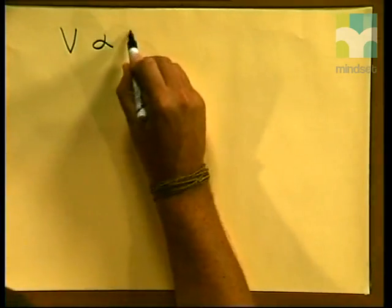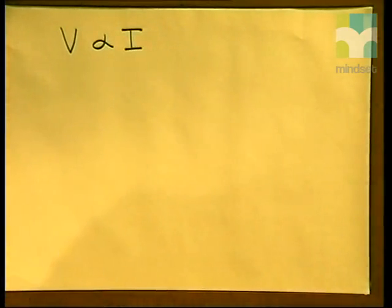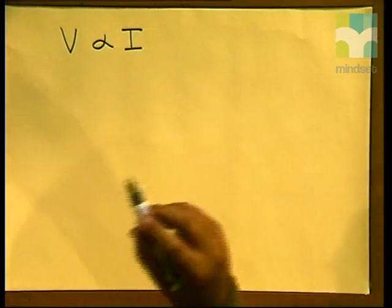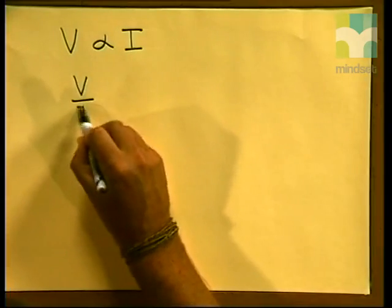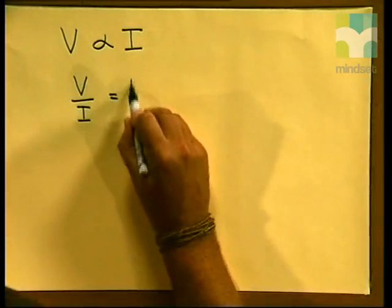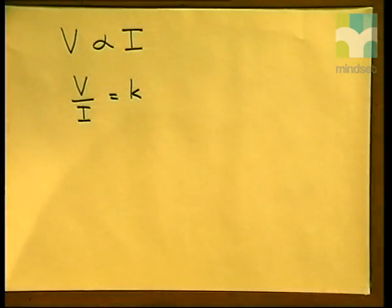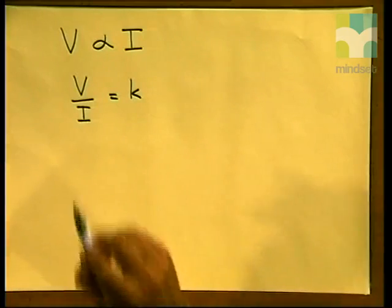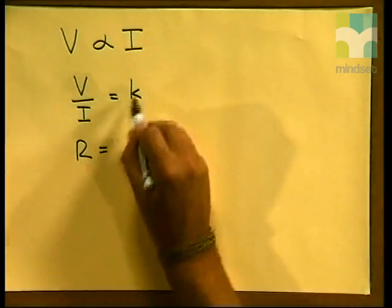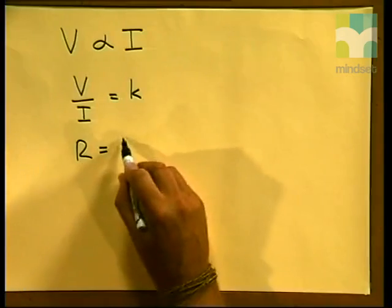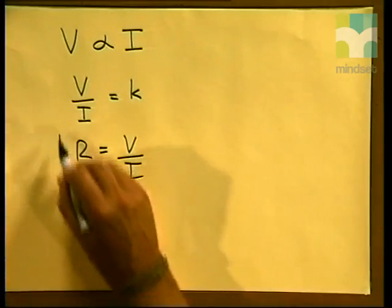Now let's see how we can write down this relationship mathematically. We know that V is proportional to I. We can also write the ratio of V divided by I as equal to a constant K. We are now going to define that constant as R, which is the resistance of the conductor. Substituting R for K, we can write R is equal to V divided by I.